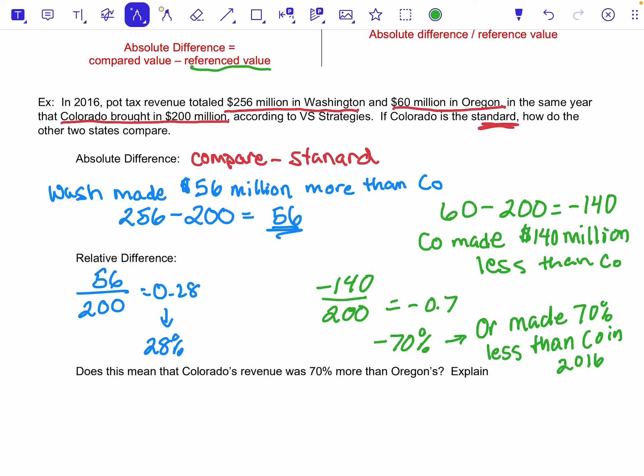So this is a thing with percents. People often think, okay, if that's true, then can't I just flip the statement? Can I say Colorado's revenue was 70% more than Oregon's? No, you cannot do that. It doesn't work that way.